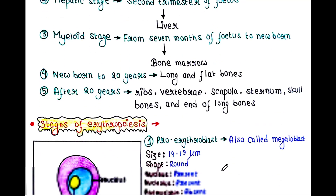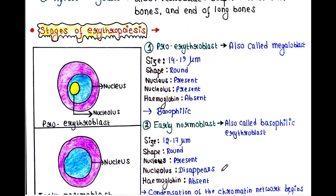Now let's talk about the stages of erythropoiesis. First is the proerythroblast, also called megaloblast. Size of the cell: 14 to 19 micrometers. Shape: round. Nucleus: present. Nucleolus: present. Hemoglobin: absent. And this cell is basophilic.